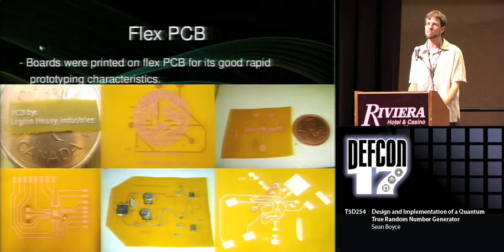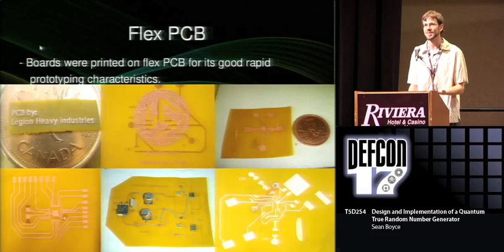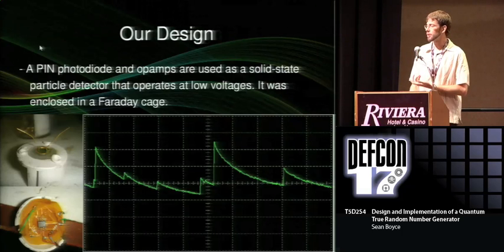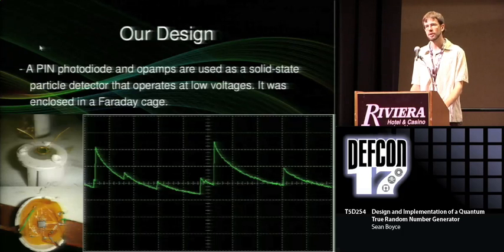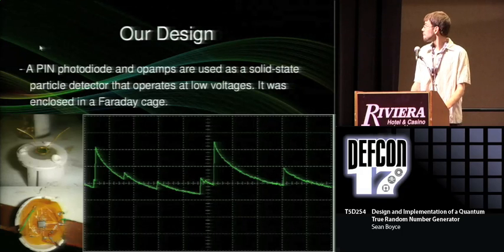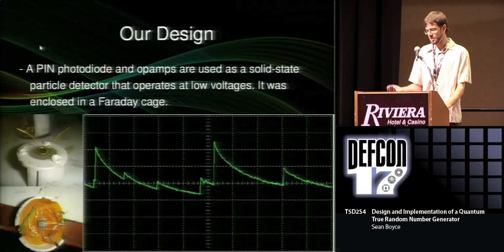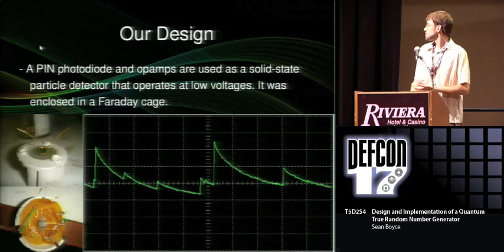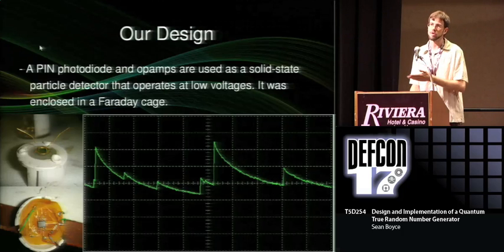The circuits I made are on a flex PCB because it's great for rapid prototyping, and I've included a couple of nice pictures of some boards. The core of the particle detector is a PIN photodiode — this is like a small solar panel. If you apply something of enough energy to one end, you knock loose a few electrons, and you can detect this as a voltage difference between the two ends. So you use what's called a transimpedance amplifier — basically an op-amp — to amplify that difference to a usable signal, which you can see as an oscilloscope trace: a spike and then a logarithmic decay.